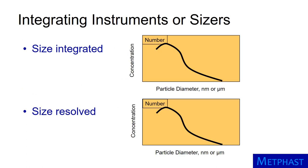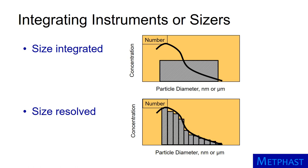There are different types of instruments, with some called size-integrated while others are called size-resolved. A size-integrated instrument provides a single value representing the average particle number concentration across many diameters. In contrast, a sizing instrument provides number concentration in many different size bins. Because these data are size-resolved, they can be used to estimate particle surface area and mass concentration by size.